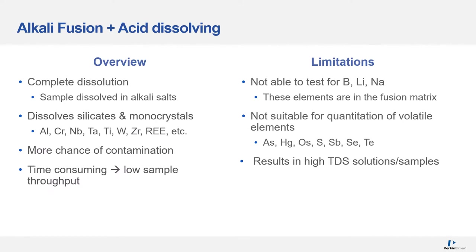The greatest advantage of alkali fusion is the ability for complete sample digestion, especially for silicates and refractory minerals. However, the disadvantages include a very high TDS solution and contaminations which can negatively affect analysis. It is also time consuming, and the method cannot be used for elements that are present in the fusion agents themselves, such as boron, lithium, and sodium. It is also not suitable for volatile element determination.